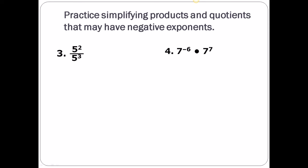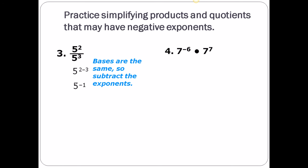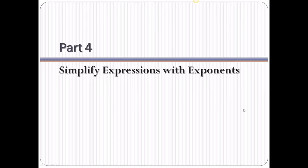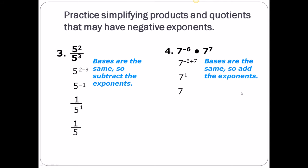Now pause and try these yourself — come back when you're done. We've got a division rule: same base, subtract exponents, numerator take away denominator. 2 take away 3 is negative 1, so we take the reciprocal of 5: that's 1 over 5 to the first power. It's bad math grammar to leave an exponent of 1, so just write it as 1/5. Next, multiplication rule — same base, add exponents: negative 6 plus 7 is 1. And 7 to the first power is just 7.